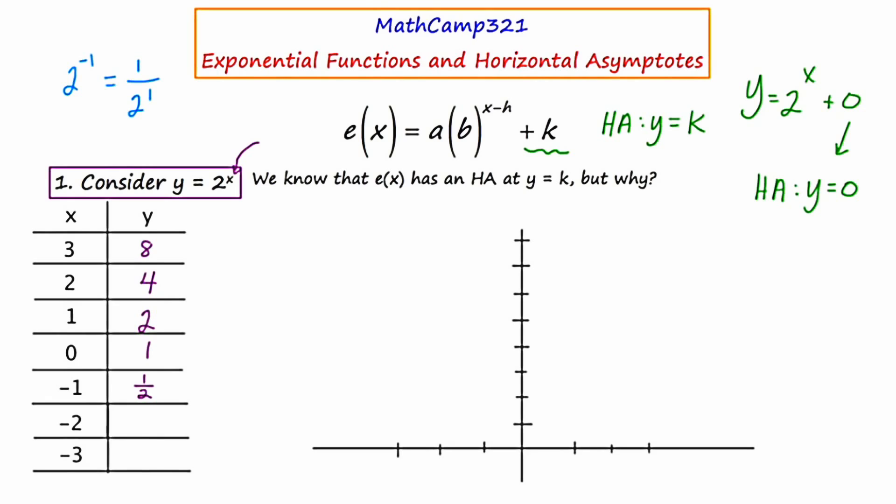Now the next substitution would be two to the negative two. Two to the negative two is like one over two squared, which would be one fourth. And finally, we would substitute two to negative three, which would give us two to the negative three power or one over two cubed or one eighth.